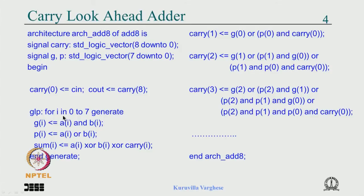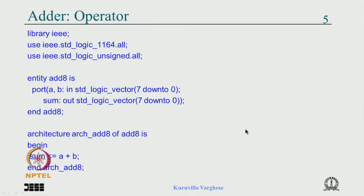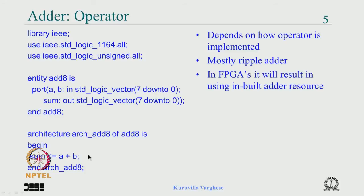We have implemented the sum and gi, pi in a loop, and the carry equations are explicitly written. Not a big deal — even for a 32-bit implementation it is not a big problem. Ultimately, most of the time we use the plus operator in VHDL, and mostly it will result in the built-in adder in FPGA, which we will look at later when we come to the FPGA part.